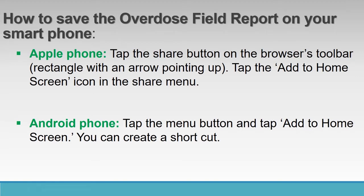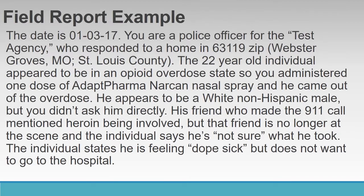For Apple Phone, tap the Share button on the browser's toolbar — the rectangle with an arrow pointing up — then tap the Add to Home Screen icon in the Share menu. For Android Phone, tap the Menu button and tap Add to Home Screen. You can create a shortcut. Now, click on the Field Report icon on your smartphone.